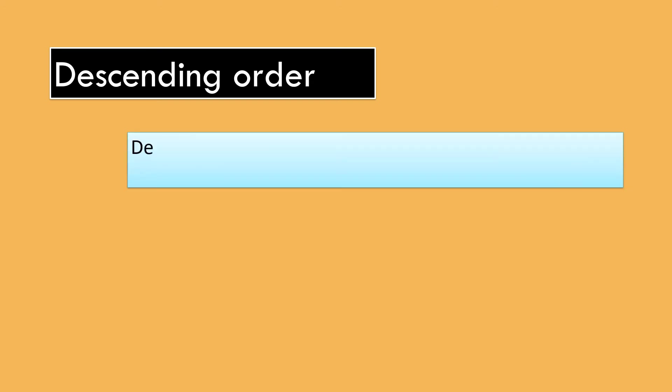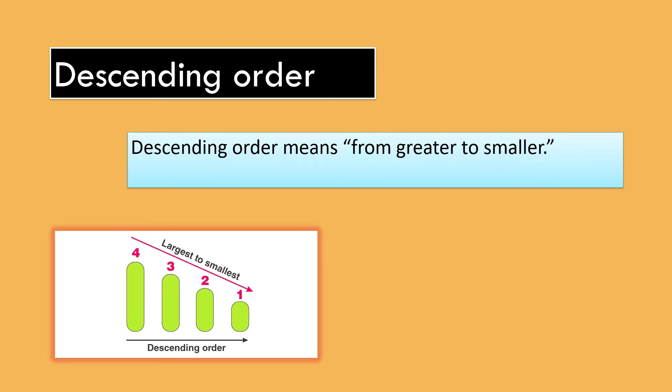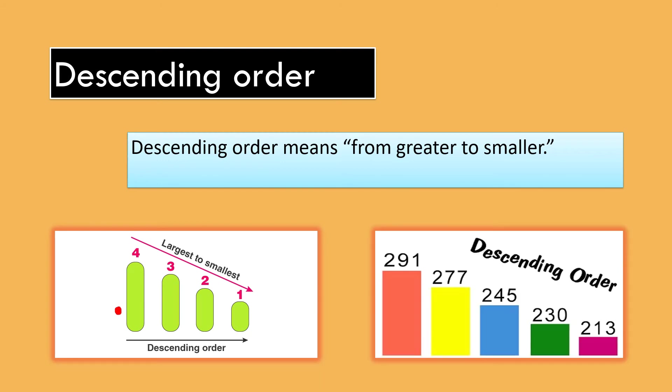Descending order means from greater to smaller, which means the greater number will come first in a row. For example, numbers 291, 277, 245, 230, 213 are arranged in descending order.